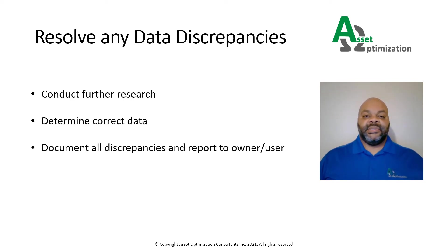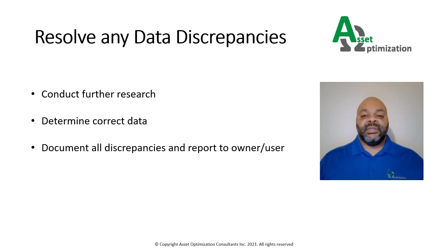If there are any data discrepancies, further research might be required to determine the correct data. For example, if the design pressure on the nameplate does not match the manufacturer's data report, the vessel design calculation can be used to determine the correct data, or contacting the vessel manufacturer might be another option. If there is a discrepancy between serial numbers in the field and the equipment files, it could be that the equipment was replaced. In any case, after the correct data is determined, the correct value should be communicated to the data source owner so that the file can be updated.